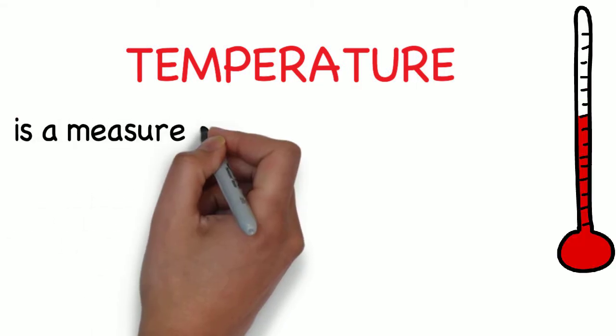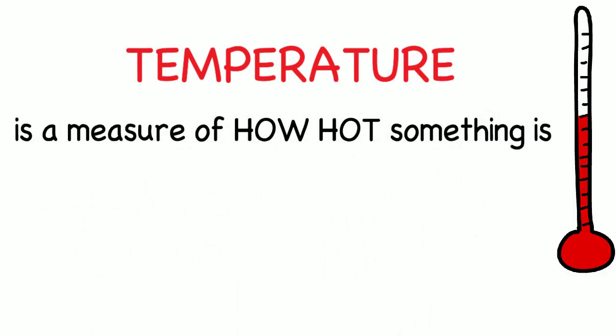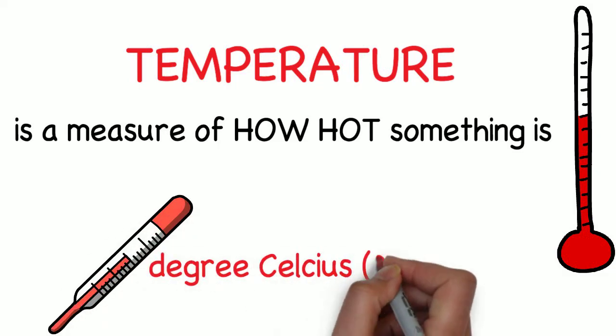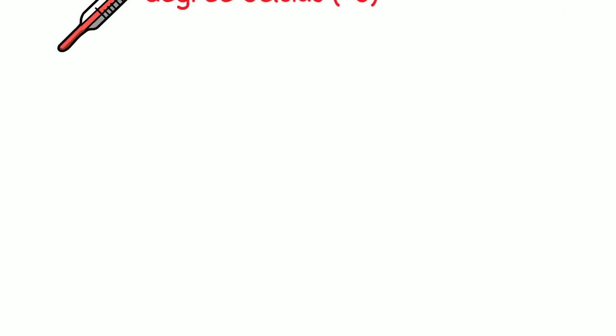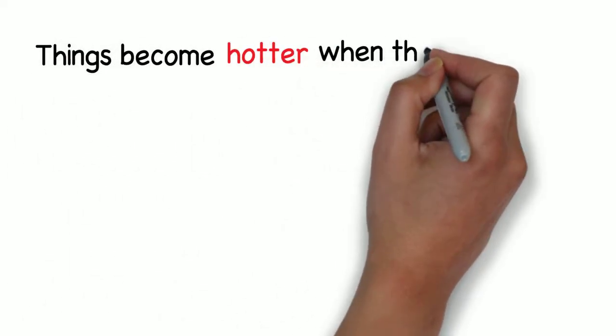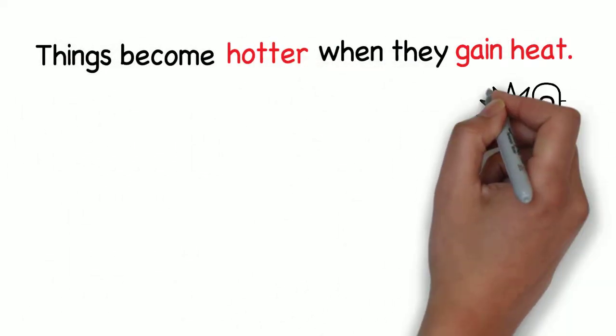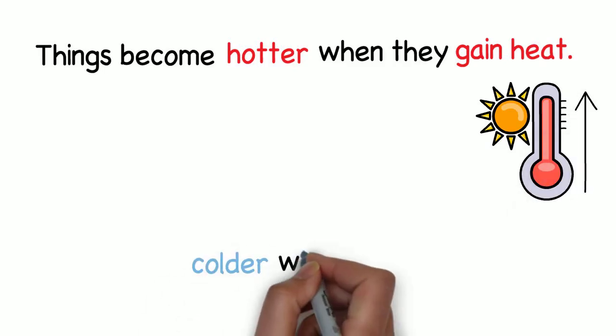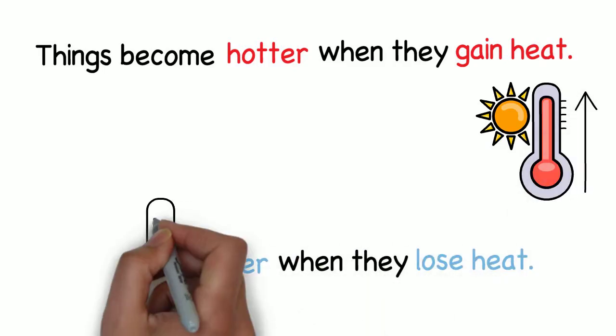What is temperature? It's a measure of how hot something is and is measured using a thermometer in degrees Celsius. Things become hotter when they gain heat and colder when they lose heat.